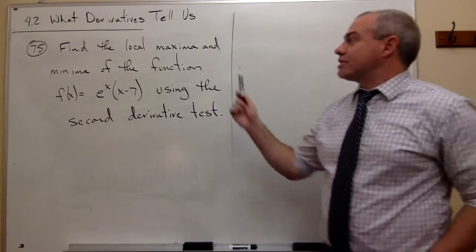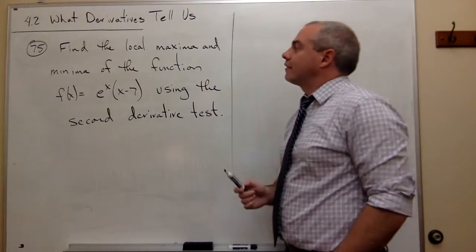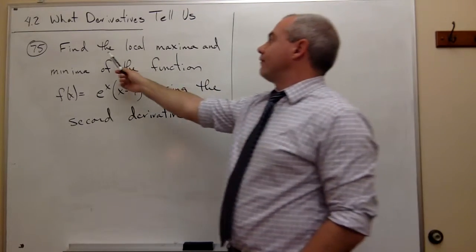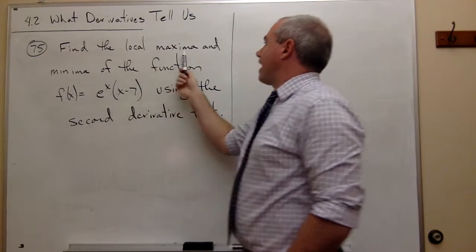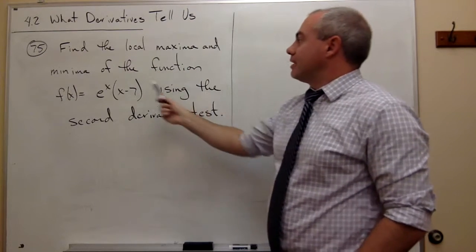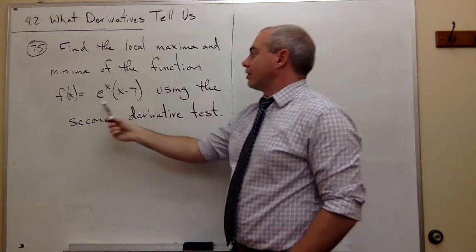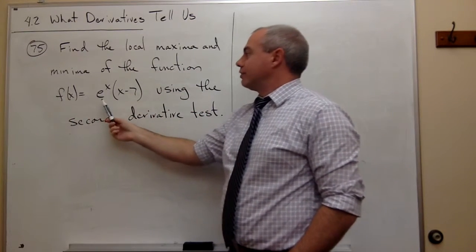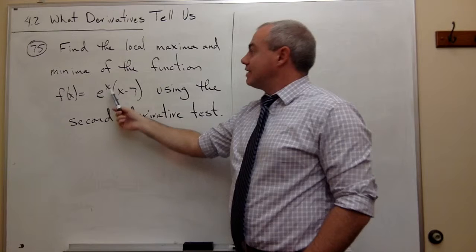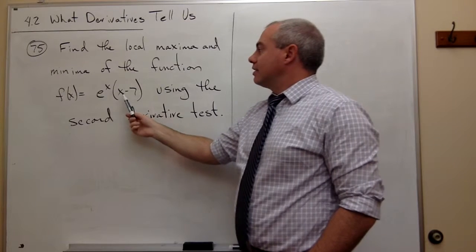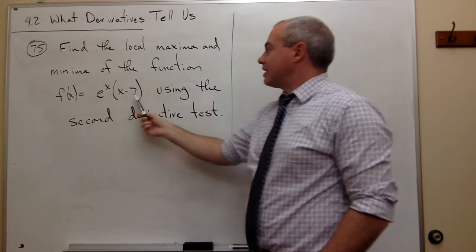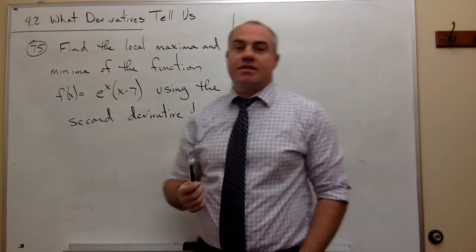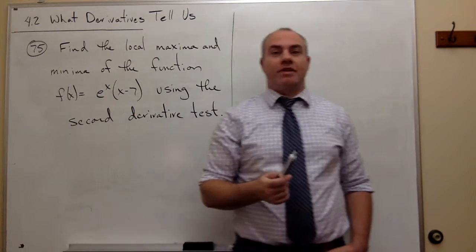Let's look at problem number 75. In problem 75, I want to find the local maxima and minima of the function f(x) = e^x times (x minus 7) using the second derivative test.